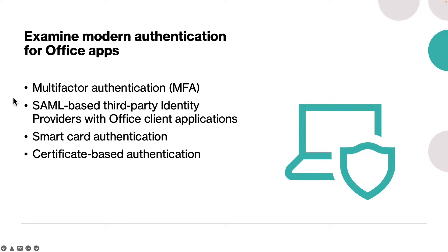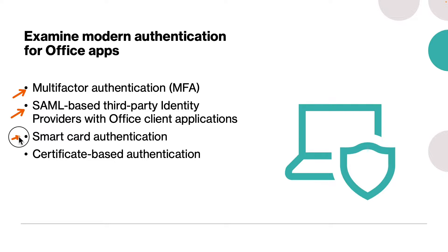Modern authentication enables sign-in features such as multi-factor authentication, SAML-based third-party identity providers with Office client applications, smart card authentication, and certificate-based authentication. By default, modern authentication is turned on for Exchange Online, SharePoint Online, Skype for Business, and Office 365 client applications like Office 2016 or 2019.